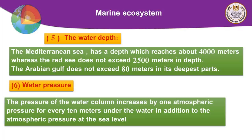For example, at a depth of 150 meters below sea level: the increase in pressure is 150 ÷ 10 = 15 atm, and the total pressure becomes 15 + 1 = 16 atm.